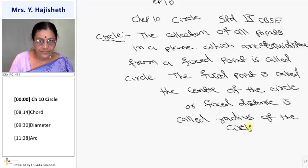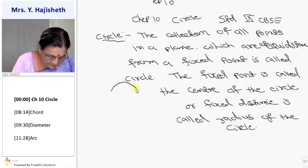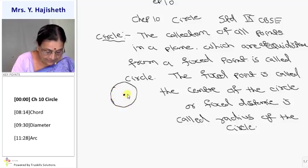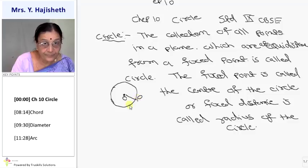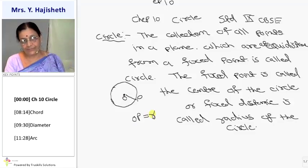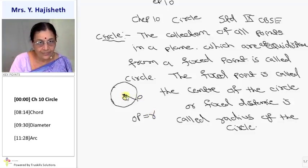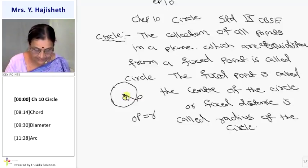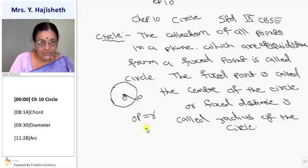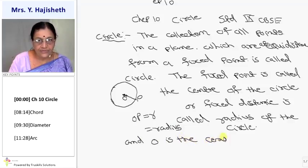Now see the figure. If I draw a circle, it looks like this. This is the fixed point, we call it the center of the circle. The fixed distance OP is called the radius. O is the center of the circle and OP is called the radius of the circle.